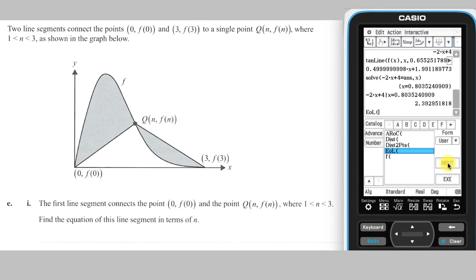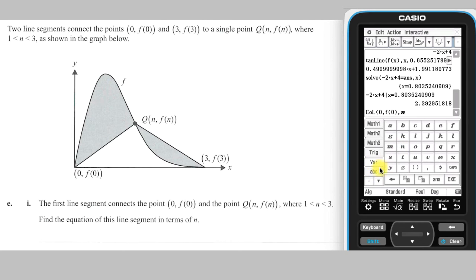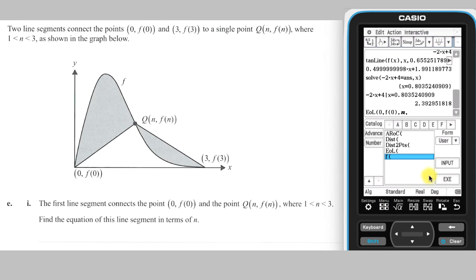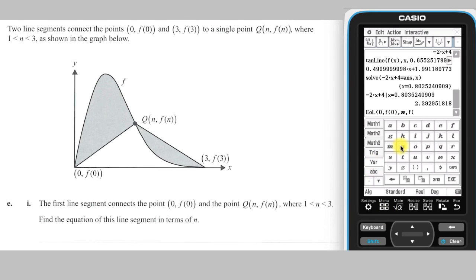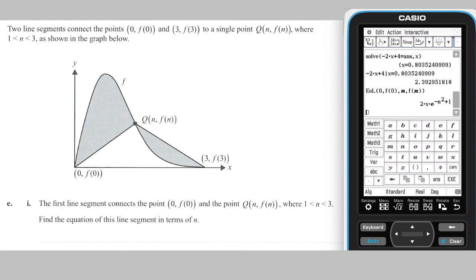Within the catalog, I'm going to use only the user-defined options. The EOL function requires four inputs being the x and y coordinates of the two points on the line. The first point is (0, f(0)) and the second point is (n, f(n)). The entry of these is going to be helped by the user-defined catalog that contains the function f. With the inclusion of the y =, this is the equation of the line segment.